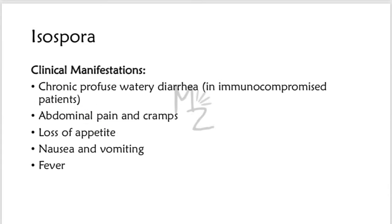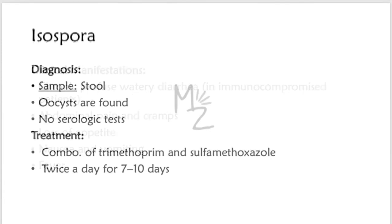Clinical manifestations: Chronic, profuse, watery diarrhea in immunocompromised patients, along with abdominal pain and cramps, loss of appetite, nausea and vomiting, and fever. Diagnosis: A stool sample is taken and typical oocysts are identified in fecal specimens. No serologic tests are available. Treatment of choice is the combination of trimethoprim and sulfamethoxazole, taken twice a day for seven to ten days.